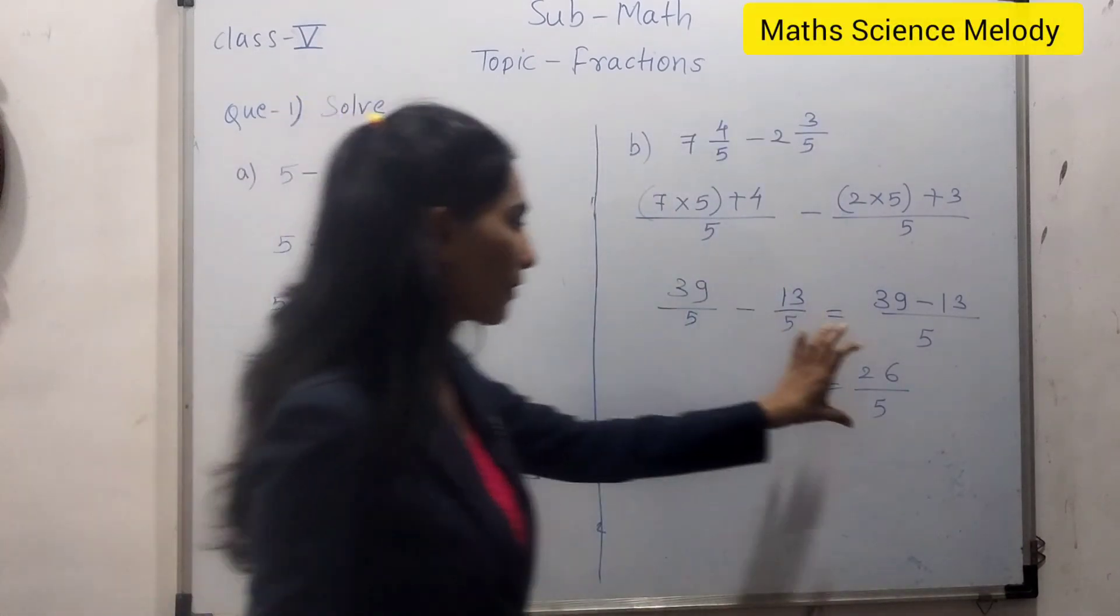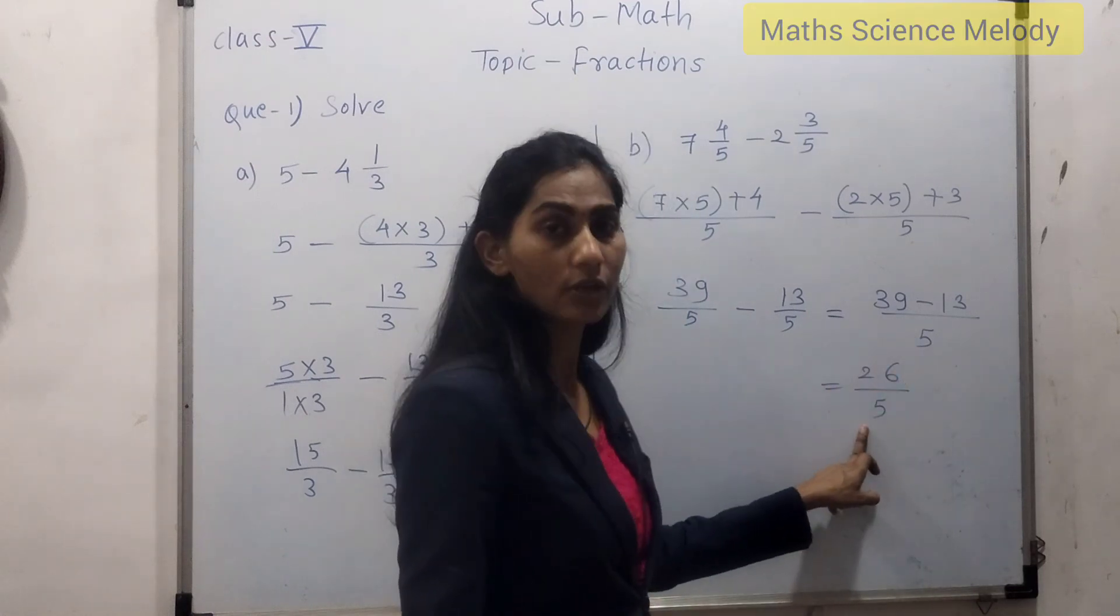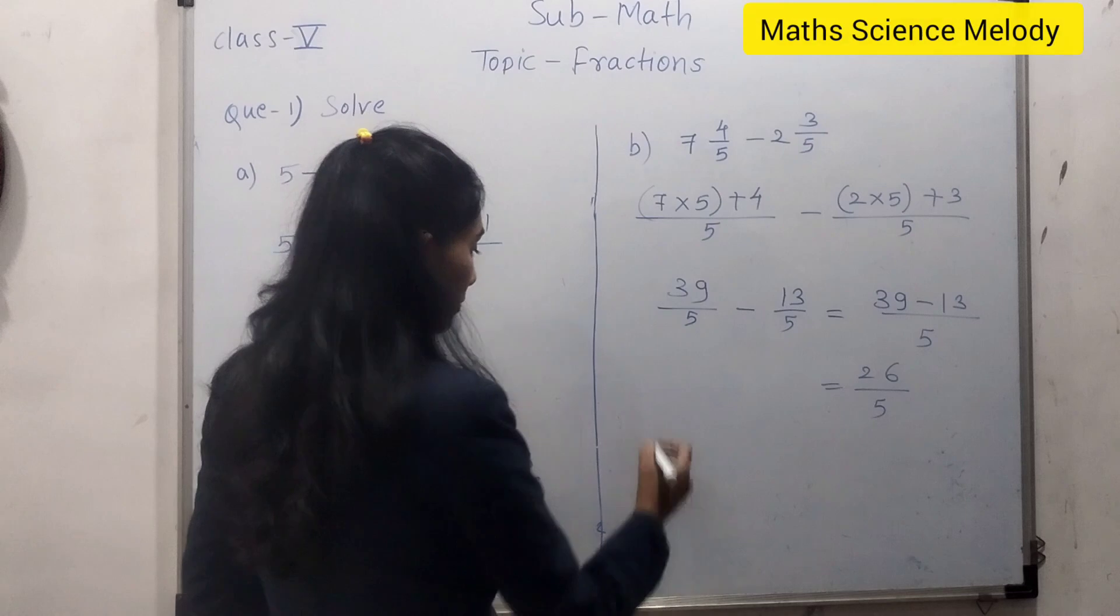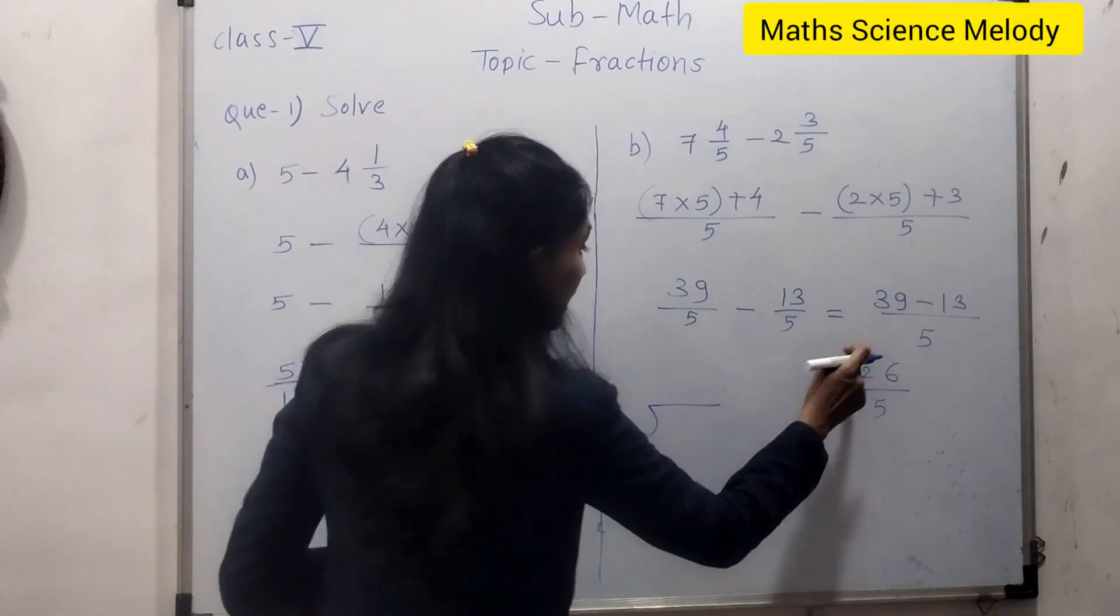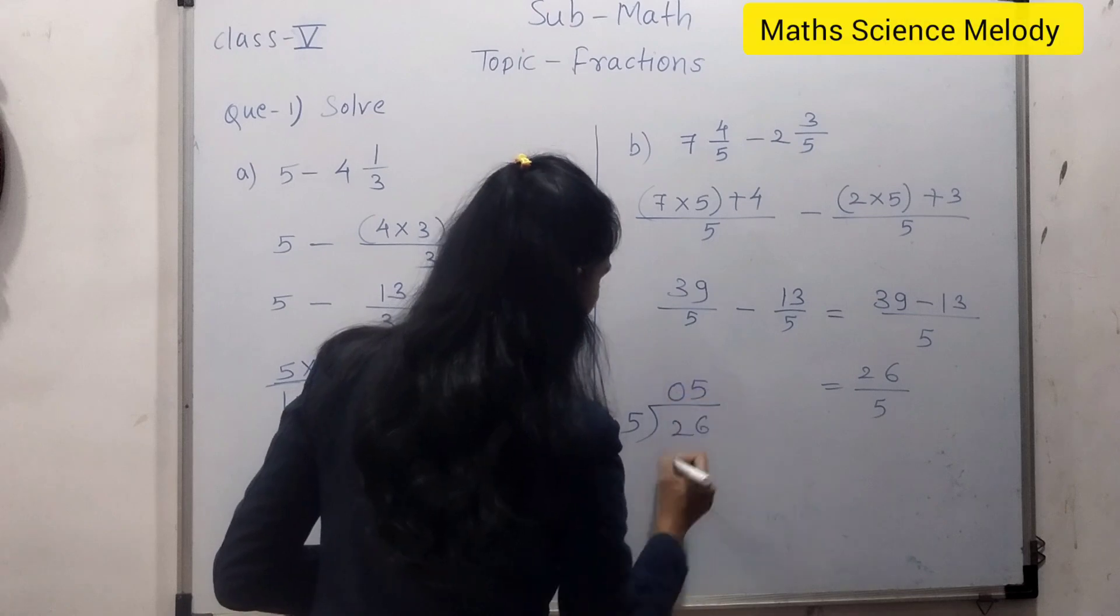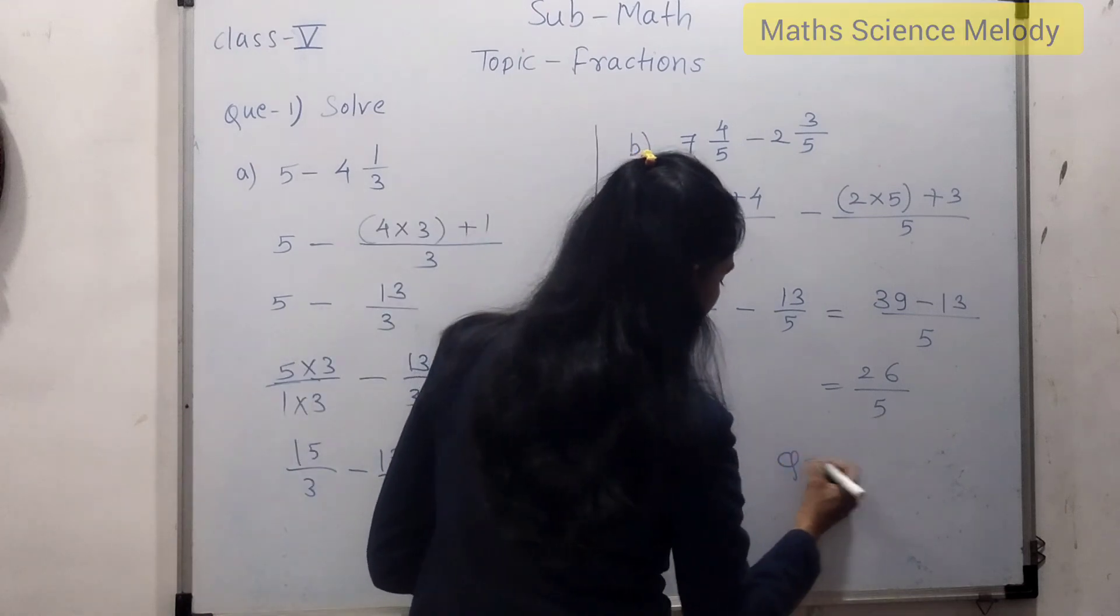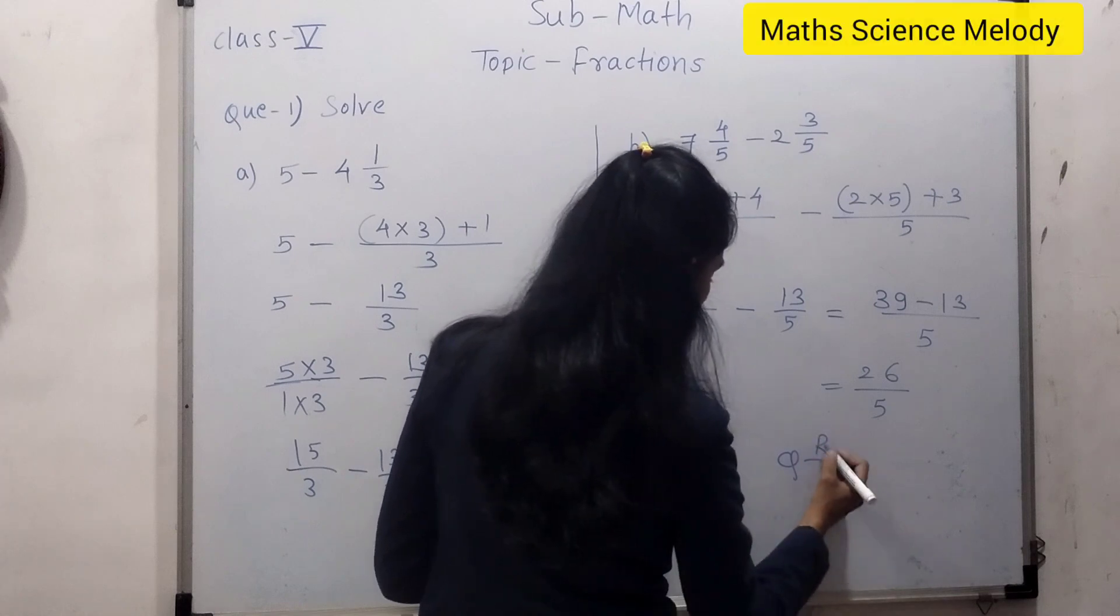If you need to convert this improper fraction—it is improper because its numerator is bigger than the denominator—to convert this improper fraction into a mixed fraction, you need to divide this numerator by this denominator. 5 into 26: 5s are 20, remainder is 1. So you know how to convert into a mixed number.